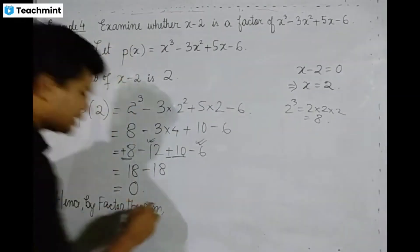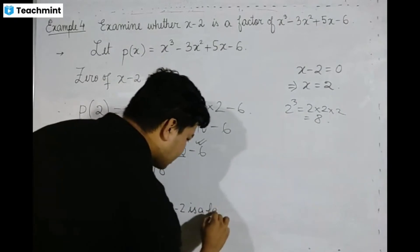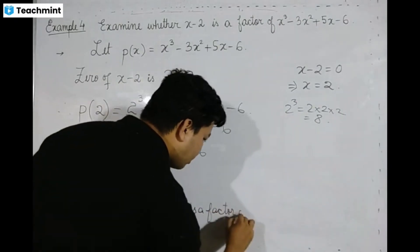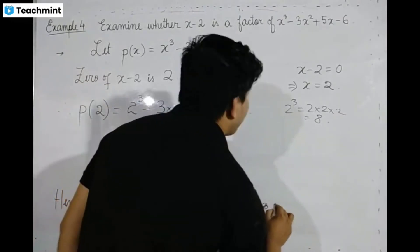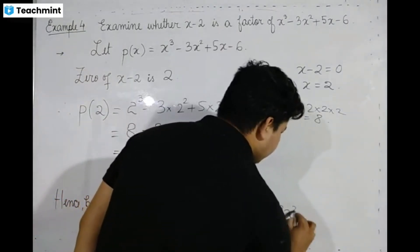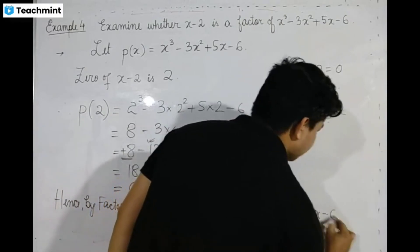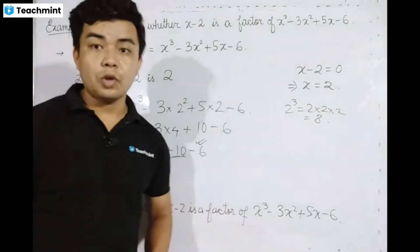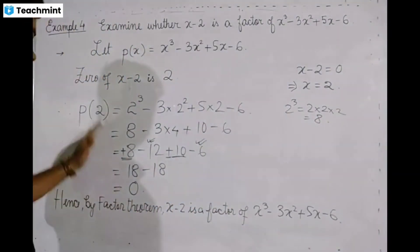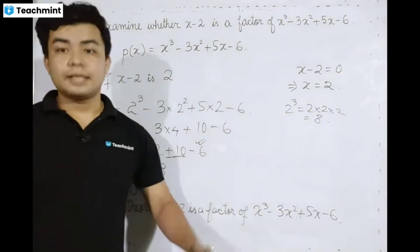x minus 2 is a factor of x cubed minus x squared plus 5x minus 6. x minus 2 is a factor of the polynomial.